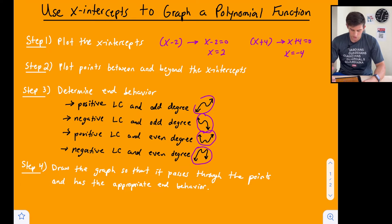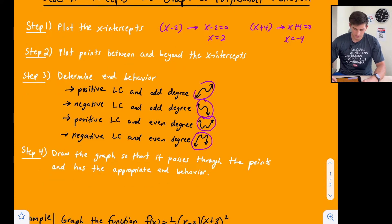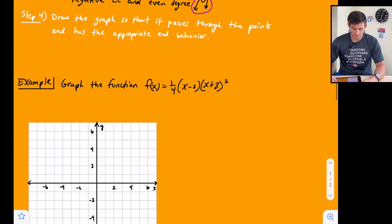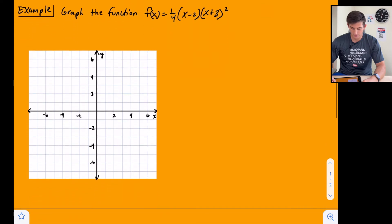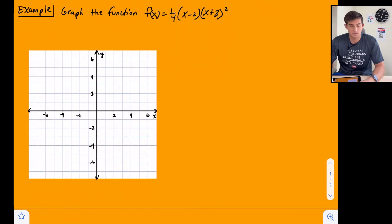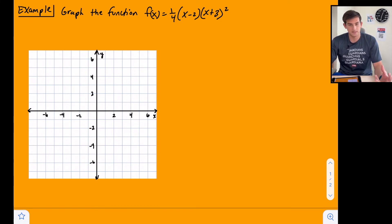Step four: draw the graph so that it passes through the plotted points and has the appropriate end behavior. Now let's look at our example: graph the function f(x) = one-fourth times (x minus 2) times (x plus 3) squared. It looks like the degree is two, but if we were to multiply (x minus 2) by the binomial (x plus 3) it would become a cubic.